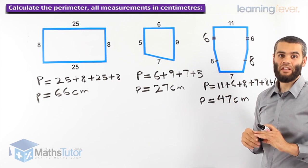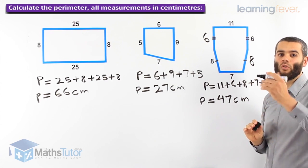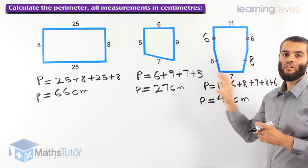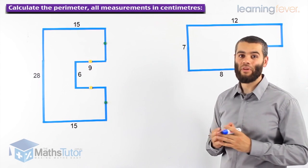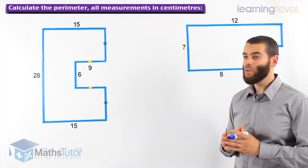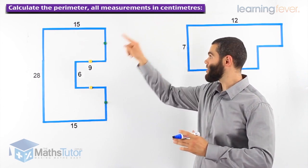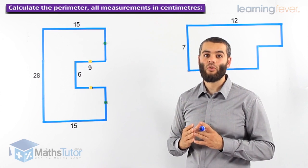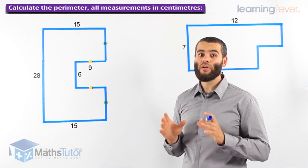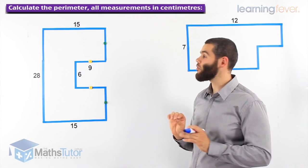This is basically what perimeter is all about — make sure we have all our sides and add them all up. Now we're going to do some more complicated ones. This shape is a polygon with straight sides. We would like to know the perimeter — the total boundary. The first thing we need to check is: do we have all the measurements? Let's start by making sure we have all the measurements first.